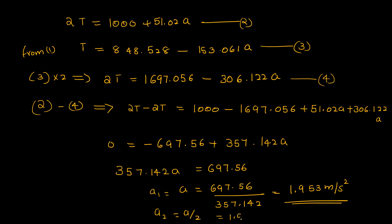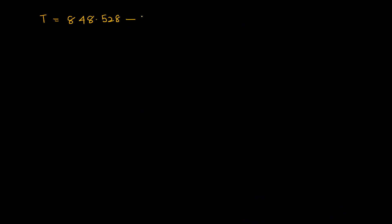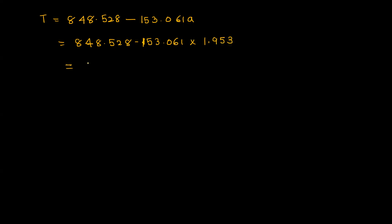The acceleration of m1 is 1.953 divided by 2, which equals 0.976 meters per second squared. The tension is equal to 848.528 minus 153.061 into 1.953, which gives a tension of approximately 549.599 Newton.